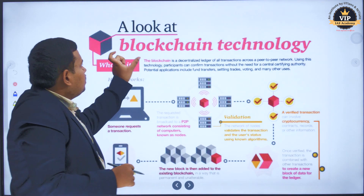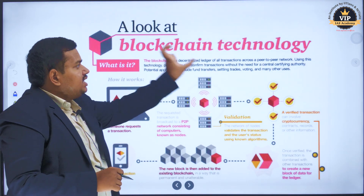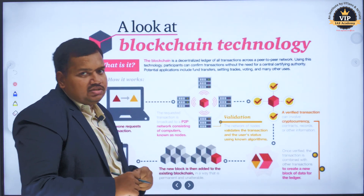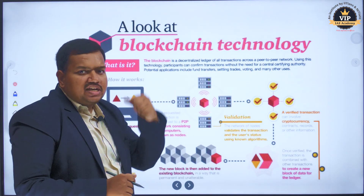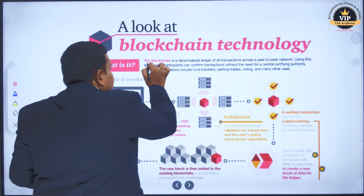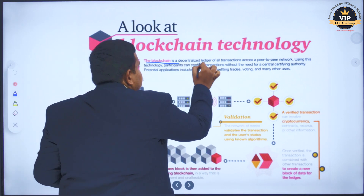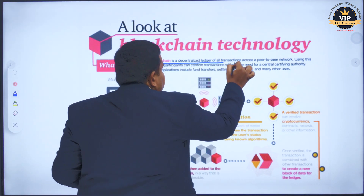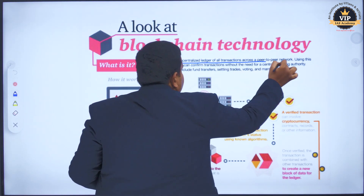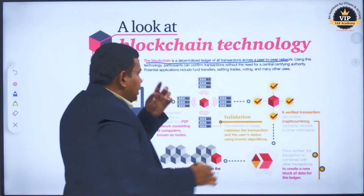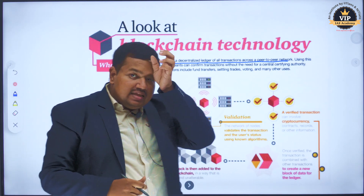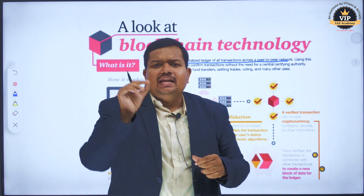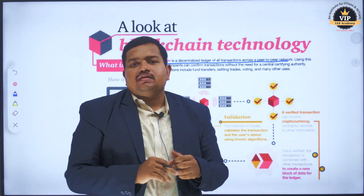Let's look at how blockchain technology works. The first definition of blockchain is: a decentralized ledger of all transactions across a peer-to-peer network.